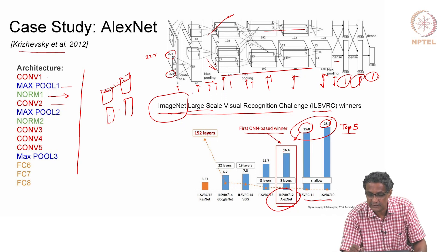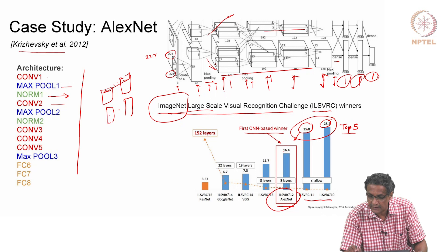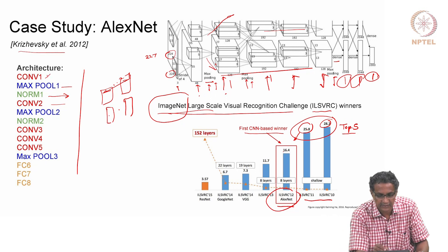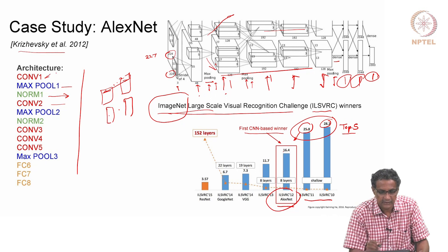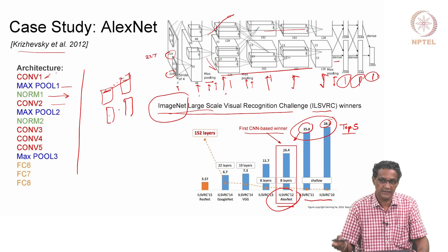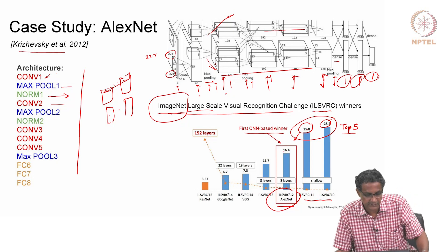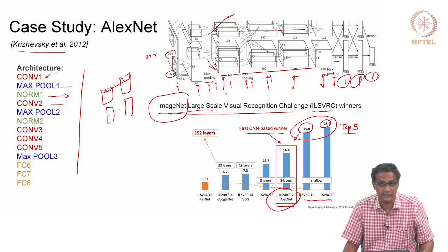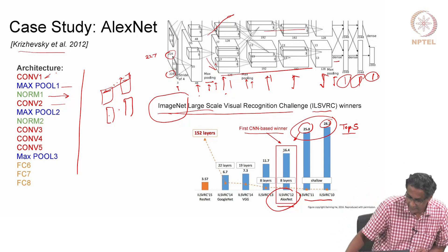If you look at how the number of layers are counted: the numbers are only increasing with conv. People are not adding max pool as a layer - that is what I meant when I said that layers are typically where computations happen.